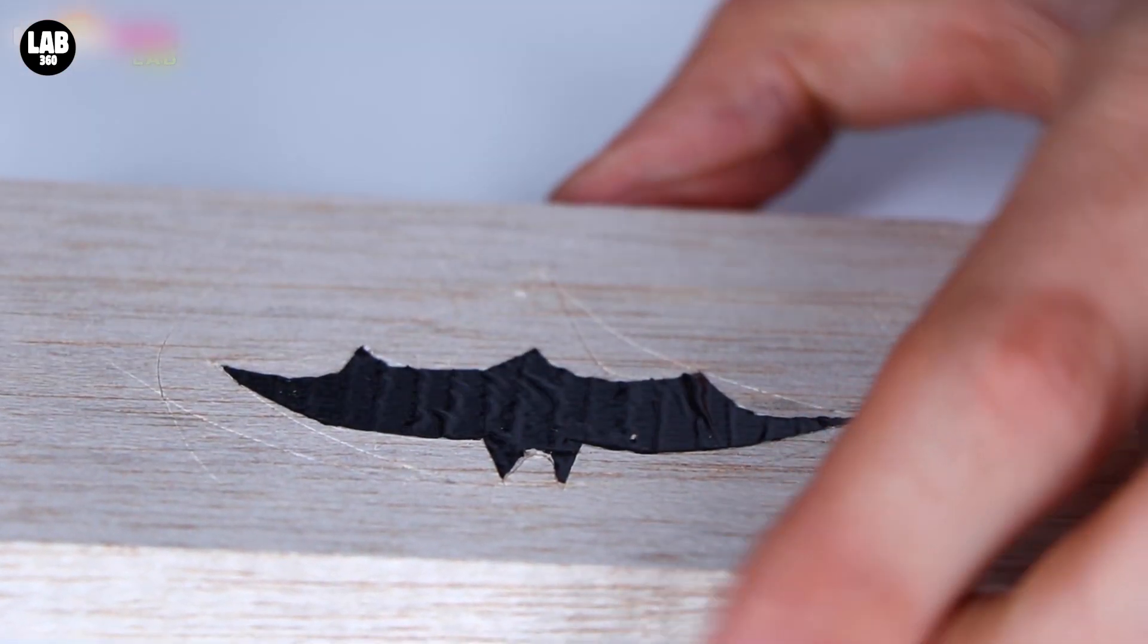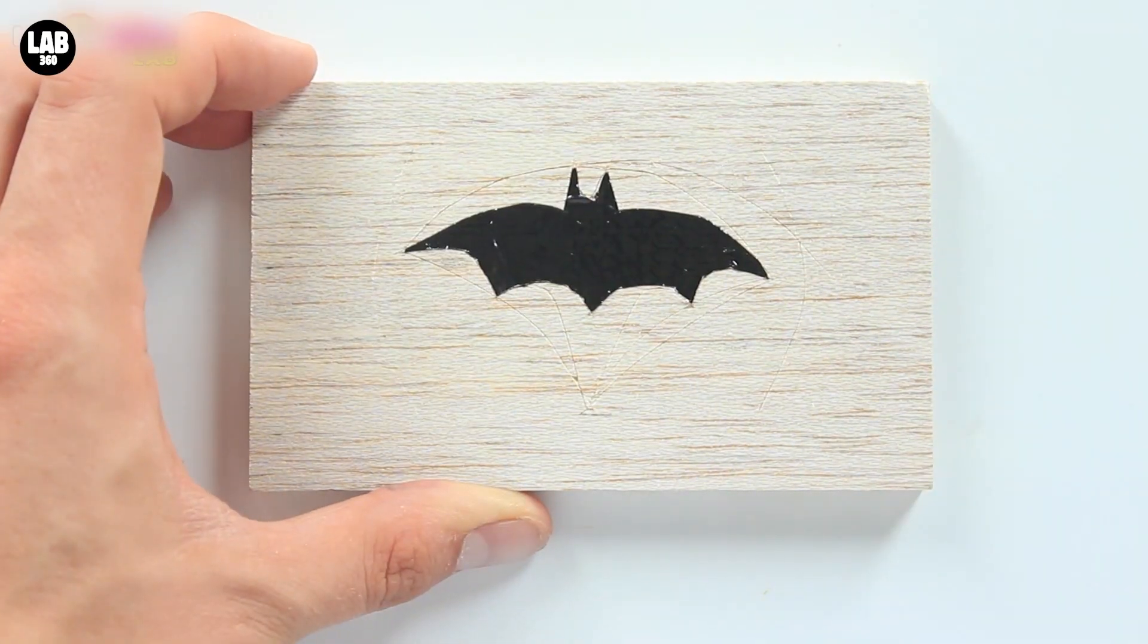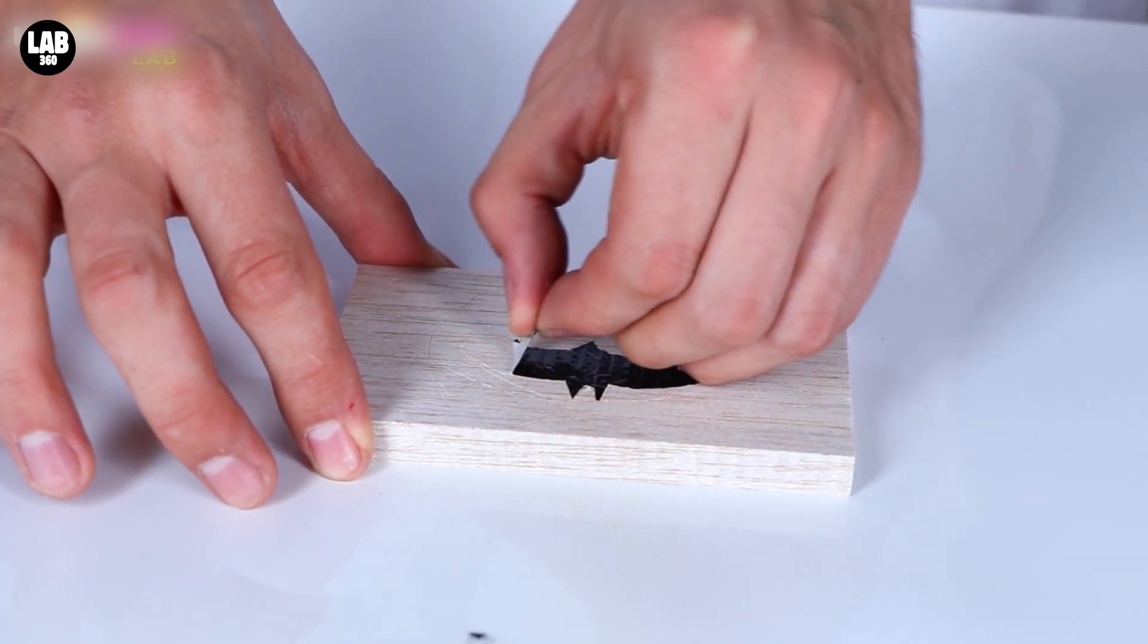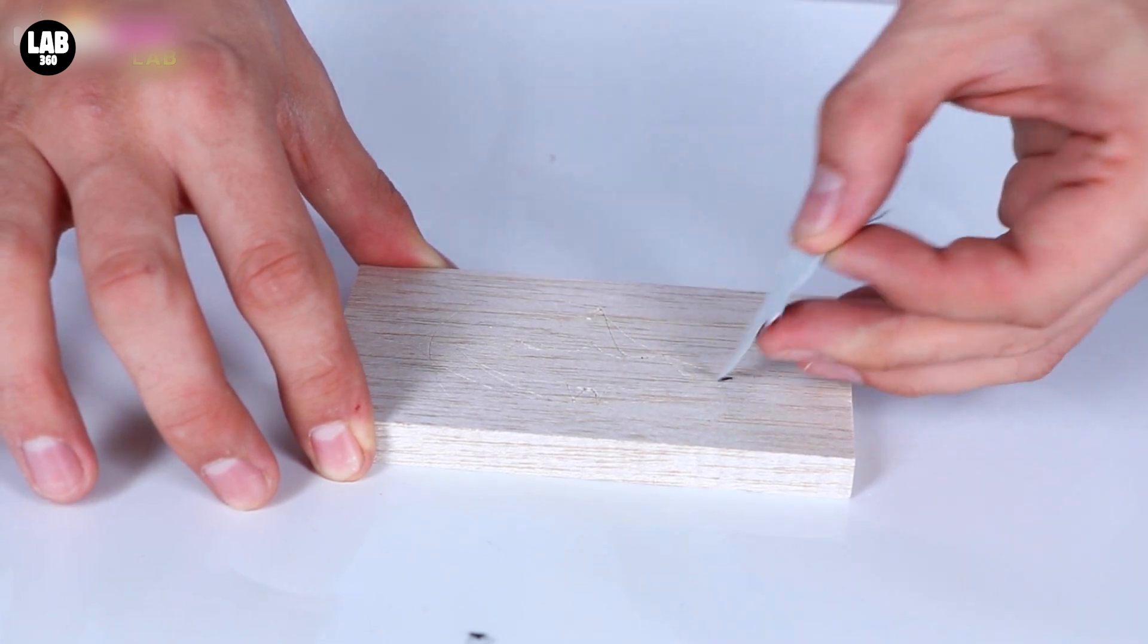Now if you're very careful and patient, you'll end up with a nice strong symbol like this. Then simply peel the tape off of the wood, and stick it back onto the plastic in the centre.